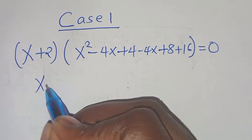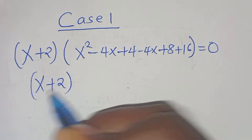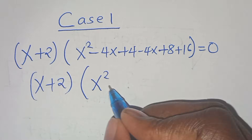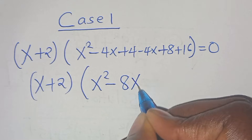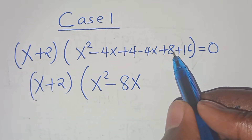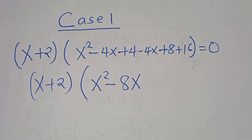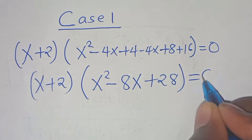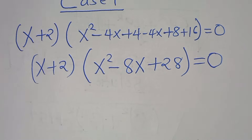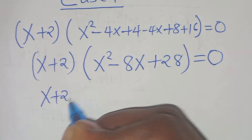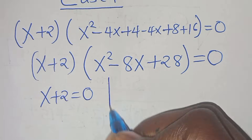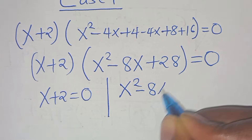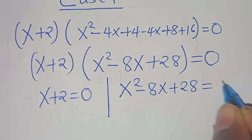So we have x plus 2, and in the bracket: x squared, minus 4x minus 4x which is minus 8x, then 4 plus 8 is 12, and 12 plus 16 is plus 28. This equals 0. Now we have two parts: the first part is x plus 2 equals 0, and the second part is the quadratic equation x squared minus 8x plus 28 equals 0.